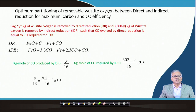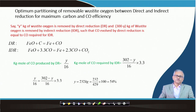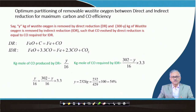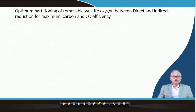Solving the optimum condition gives y = 232 kg. This is basically 54% of 429 kg — 429 being the total oxygen contained in Fe₂O₃ per ton of iron produced. So 232 kg of total removable ore oxygen is removed by direct reduction, meaning 54% direct reduction is the optimum. Now let us calculate the CO efficiency and carbon consumption from this optimum condition.